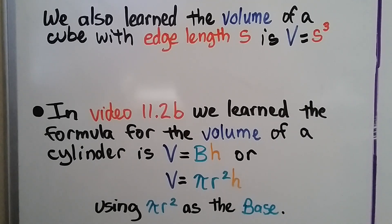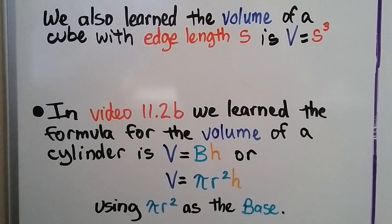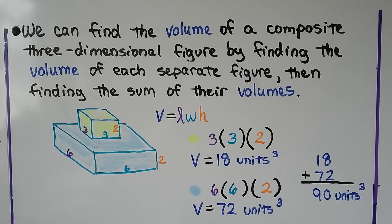In video 11.2b we learned the formula for the volume of a cylinder: volume equals base times height, or volume equals pi r squared times h, where pi r squared is the base area. We can find the volume of a composite three-dimensional figure by finding the volume of each separate figure, then finding the sum of their volumes.